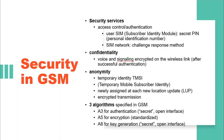Anonymity: To provide user anonymity, all data is encrypted before transmission and user identities are not used over the air. Instead, GSM transmits a temporary identifier called Temporary Mobile Subscriber Identity (TMSI), which is newly assigned by the VLR after each location update. Additionally, the VLR can change the temporary identifier at any time.